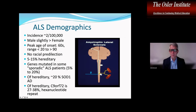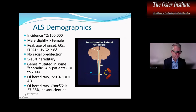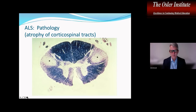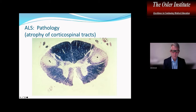Here on the right we have the upper motor neuron going from the cortex down, crossing over the pyramidal decussation, going through the lateral corticospinal tract, going to the lower motor neuron in the anterior horn, and then out to the muscle. In the ALS pathology slide, this is a cross-section of spinal cord stained with myelin blue, and you can see where the asterisks are that the lateral corticospinal tracts are not staining — there's been a loss of the tract.